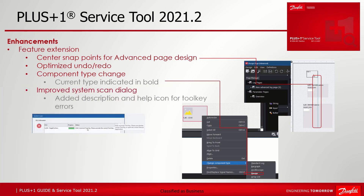The next extension is more of a defect fix: optimized undo/redo. In a previous version, when you came to the point where you couldn't undo anything, the screen would flash — and this defect has been fixed. The property setting 'Change component type' was added in a previous version; in this version the current component type is highlighted bold, showing what the current type is.